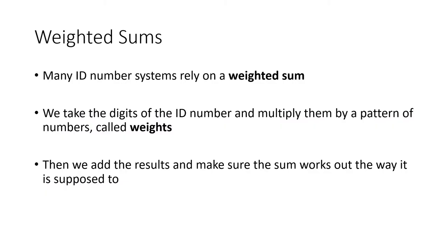Many of the methods that we discussed use what's called a weighted sum. For a weighted sum, we take the digits of our ID number and we multiply them in order by a pattern of numbers called weights. We get a bunch of products, add them up, and make sure that result satisfies whatever criteria it's supposed to satisfy.